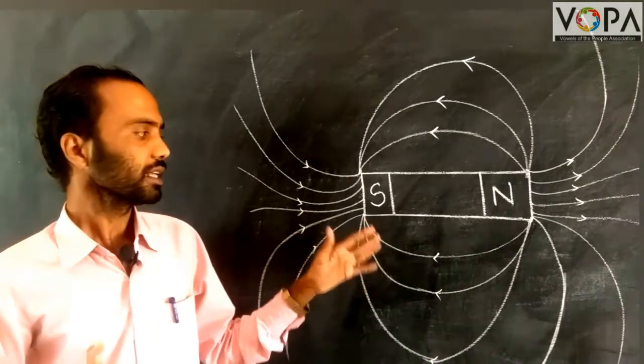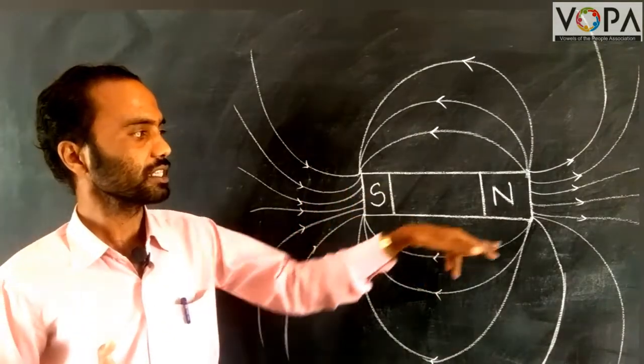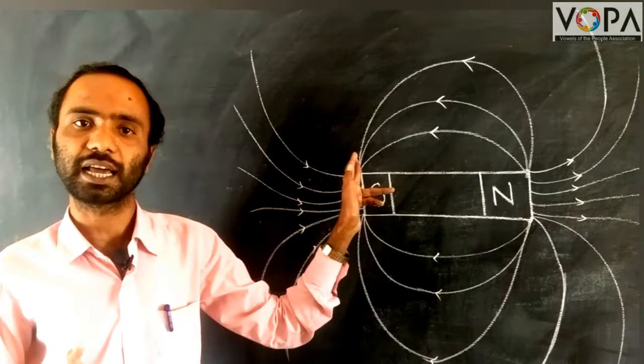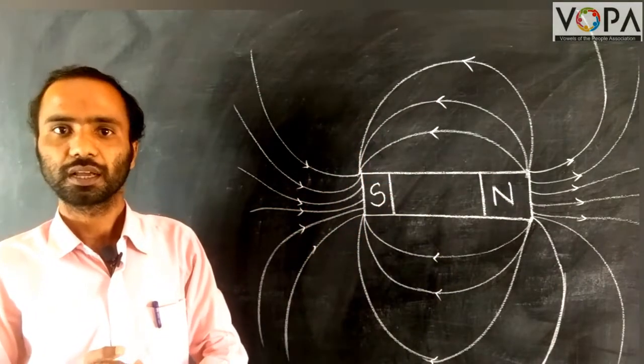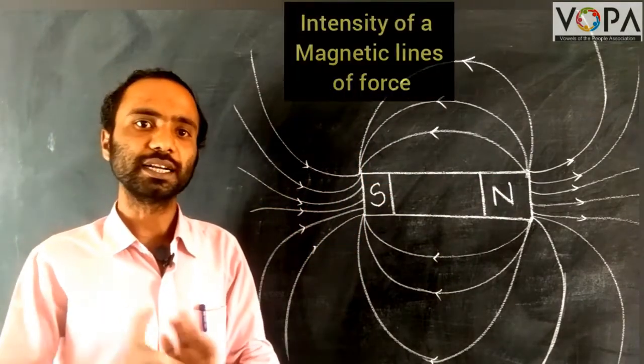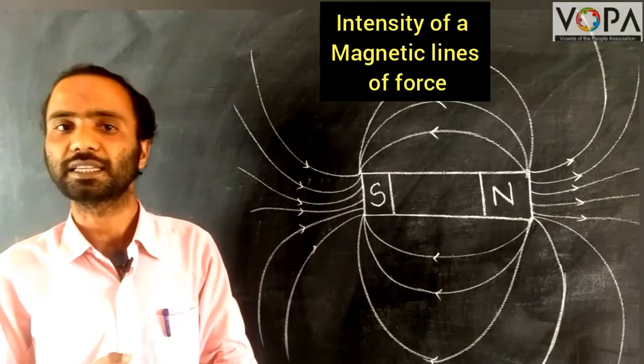This magnetic field is shown by these magnetic lines of force. Now we will learn about the intensity of the magnetic lines of force.